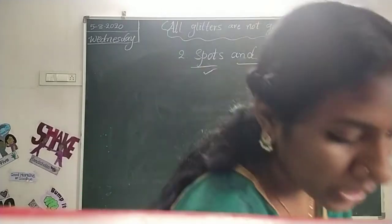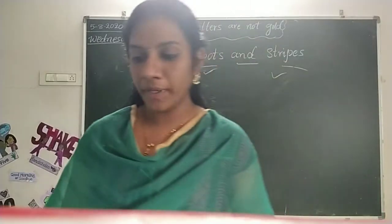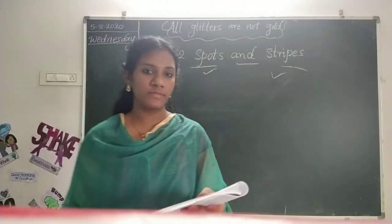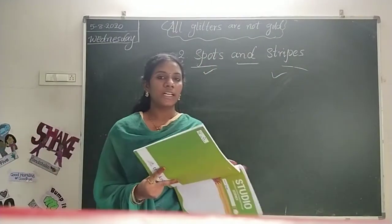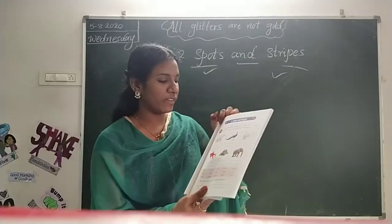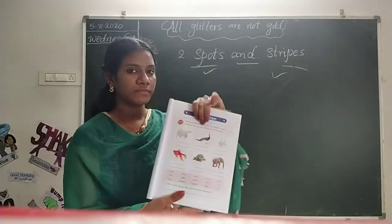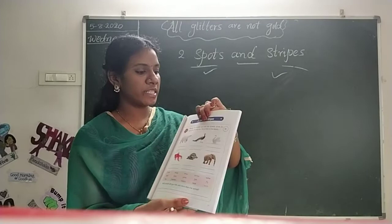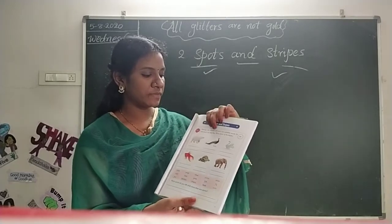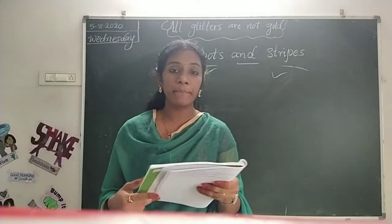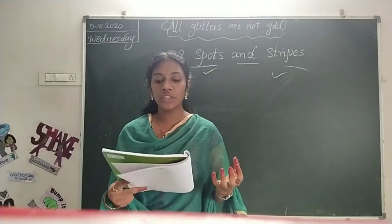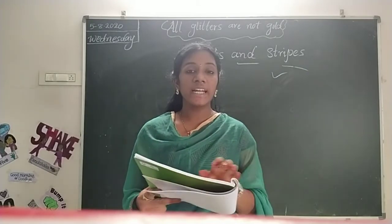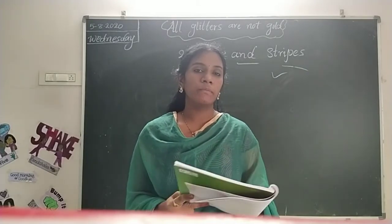Now we are going to our topic. First we have a pep activity — Activity 2.1. Look at your textbook, page number 70. Identify the animals and pick out suitable words for each from the help box. Write them in the blanks.